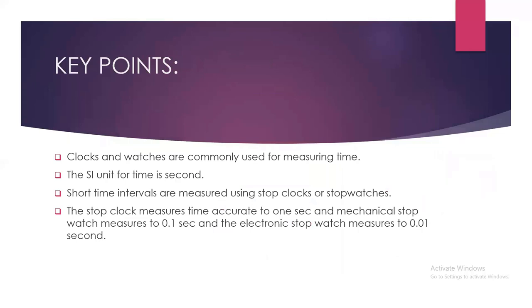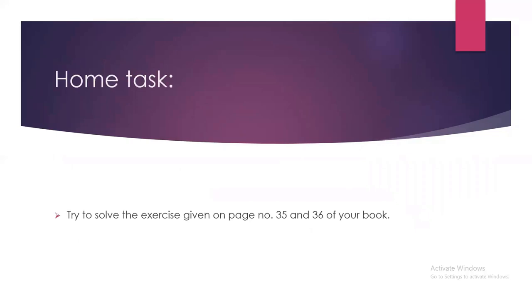To summarize this topic, you can read the key points. Number one: clocks and watches are used commonly for measuring time, and the standard international unit for time is second. Short intervals are measured using stop clocks or stopwatches. The stop clock measures time accurate to 1 second, the mechanical stopwatch measures to 0.1 second, and the electronic stopwatch measures to 0.01 second. I hope this topic is clear. If you have any confusion or question, you can ask. Your homework is to try to solve the exercises on pages 35 and 36 of your book.